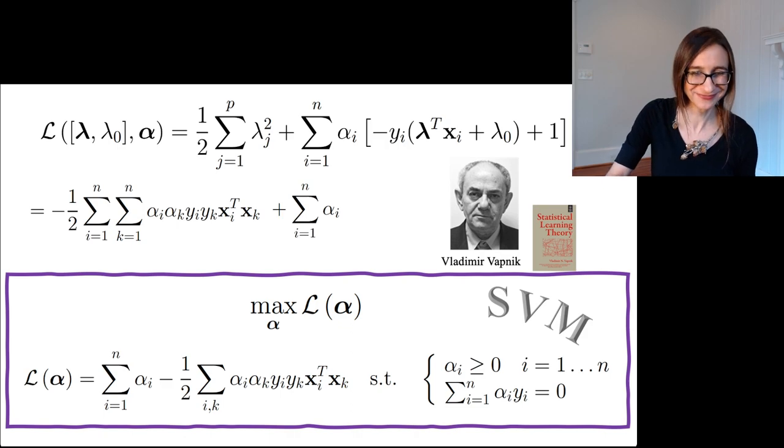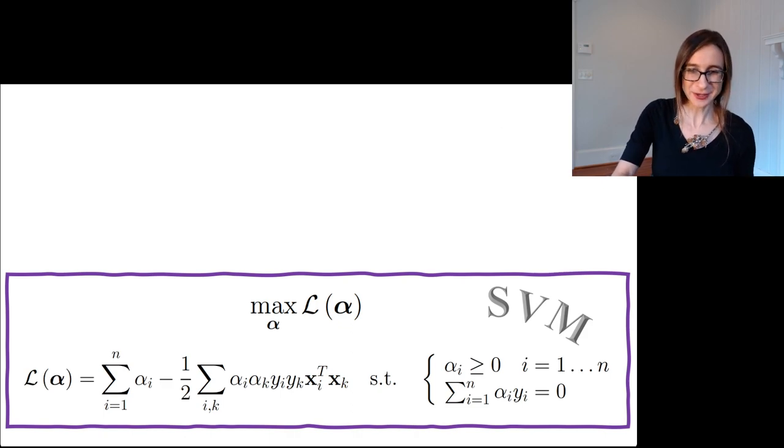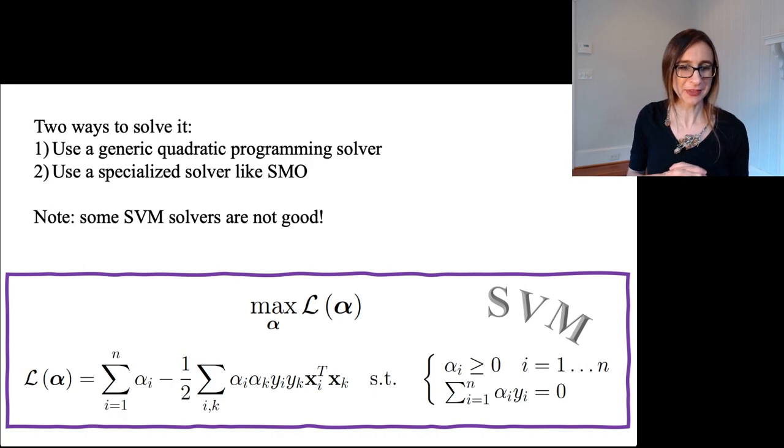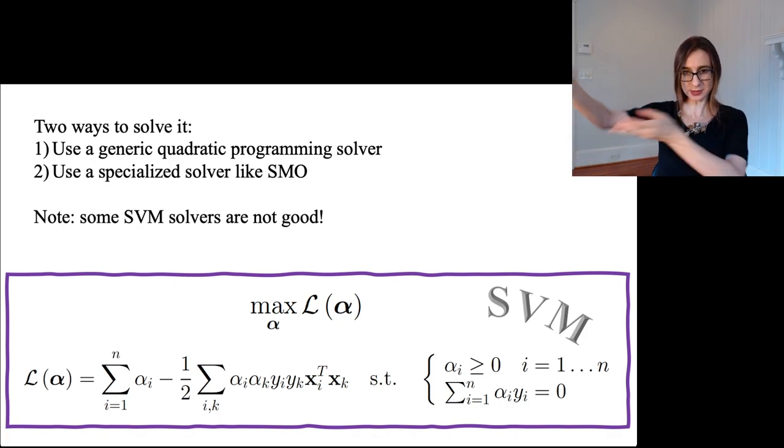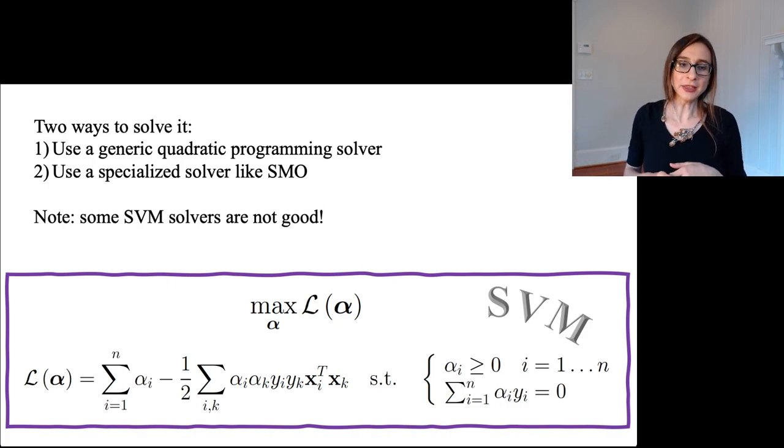There are two ways to solve this problem. The first is to use a generic quadratic programming solver. This is a quadratic program because the alphas are multiplied by each other, so it's quadratic. You could take this thing and pump it into a generic solver and tell it this is a QP - you know how to solve QPs, you solve it.